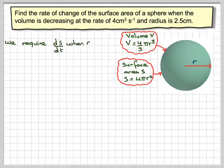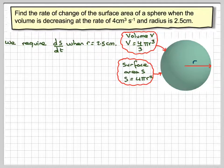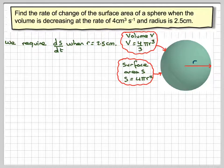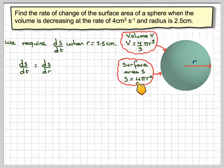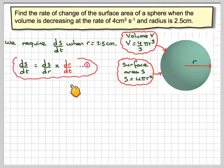We require ds/dt when r is equal to 2.5 — the rate of change of the surface area when the radius is 2.5 cm. So ds/dt will be ds/dr, which we can get from the surface area formula, times dr/dt. We'll call that equation 1.